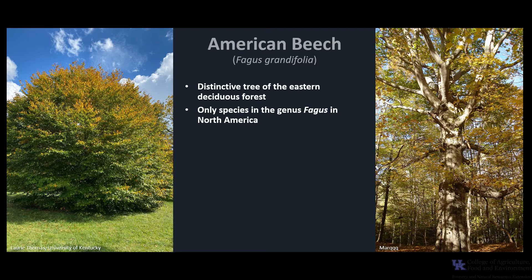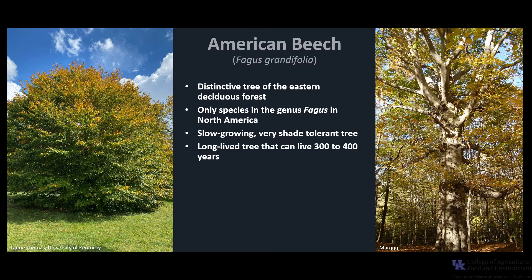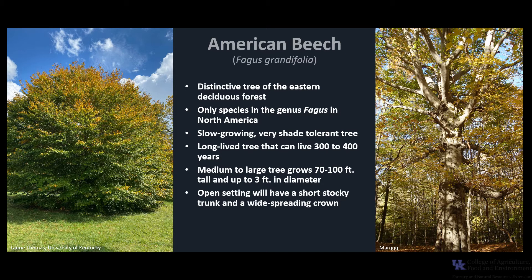It is the only species in the genus Fagus in North America. American beech is a slow-growing, very shade-tolerant tree. It's a long-lived tree that can live up to 300 to 400 years. It is a medium to large tree that grows 70 to 100 feet tall and up to 3 feet in diameter. Grown in an open setting, the tree will have a short stocky trunk and wide-spreading crown, but in a forested setting, it will have a clear, straight, massive trunk and a much smaller crown.